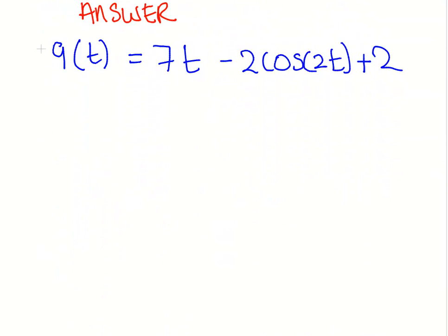C is equal to plus 2. So this is the answer there. q(t) equals 7t minus 2 cos 2t plus 2. Actually, you should put it in the units, and the units for charge, I believe, are coulombs. In these questions, always be mindful of the units that you are working with, the physical units.